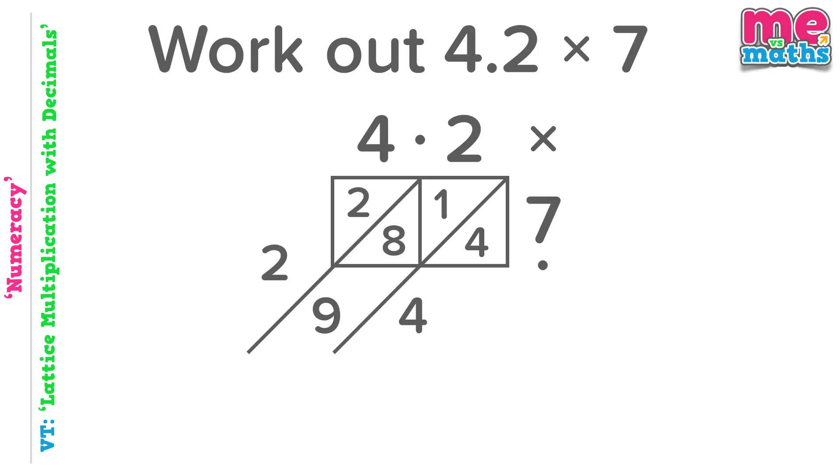Now obviously 4.2 times 7 is not 294, so now we need to decide where our decimal point is going to go and this is the method that I suggest you use. Put a finger on each decimal point, then go straight down from the point at the top and straight across from the point at the side until the fingers meet like so. Then from the point where your fingers met, follow the diagonal line down to the bottom. This is where your point will go, so our answer is actually 29.4.